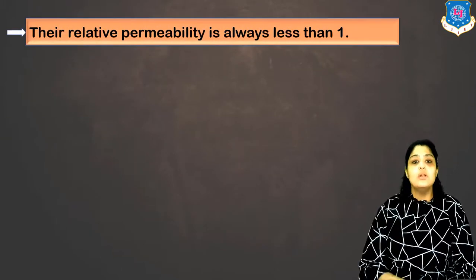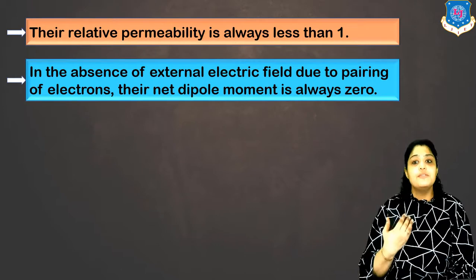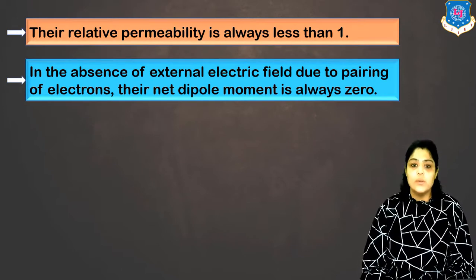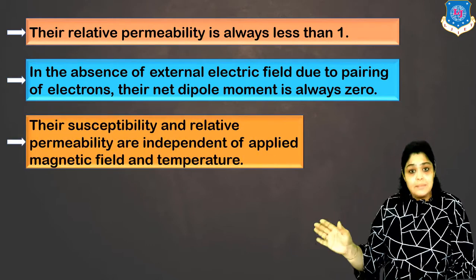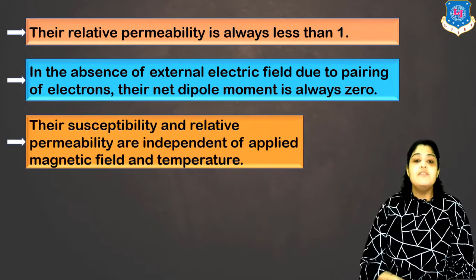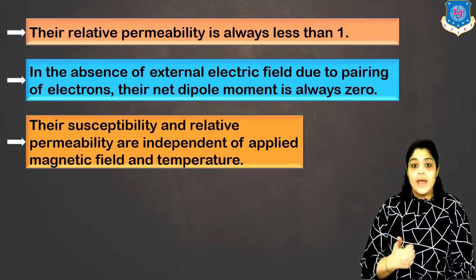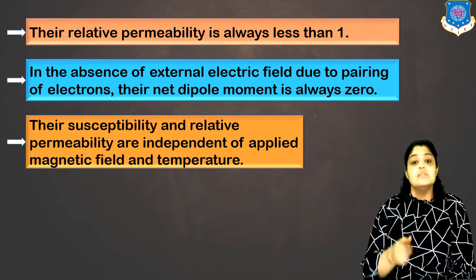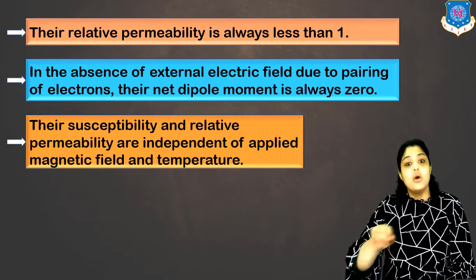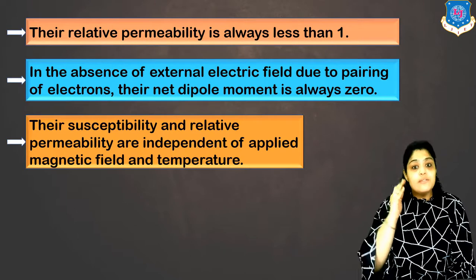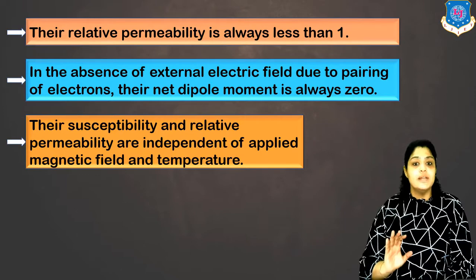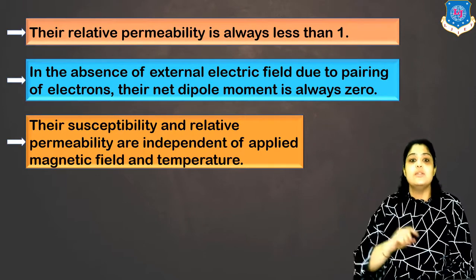Their permeability is always less than one. In the absence of external field, due to pairing of electrons, the net dipole moment is always zero. Their susceptibility and permeability are independent of the applied field and temperature. Temperature doesn't have any effect because they do not have dipoles and the magnetization is always in the opposite direction. These materials will always repel the magnetic field whatever the magnitude of the external field.